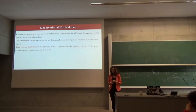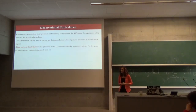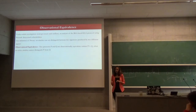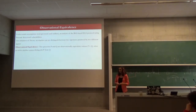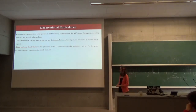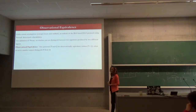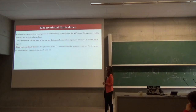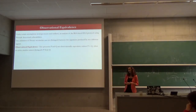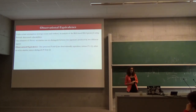So now we have a new definition of privacy. In this case, what does it mean to be private? Our definition is that an attacker cannot distinguish between two signatures from users belonging to the same group signature issued by the issuer. We can translate this into observational equivalence in ProVerif, which means you have two processes P and Q, and they are equivalent if an active attacker cannot distinguish between the two processes. Thank you very much.